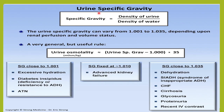Remember, specific gravity of urine is nothing but the density of urine divided by the density of water — we measure the density of urine relative to the density of distilled water. That is the formula of specific gravity. It varies from 1.003 to 1.030 depending upon the renal perfusion and also the hydration status of the individual.